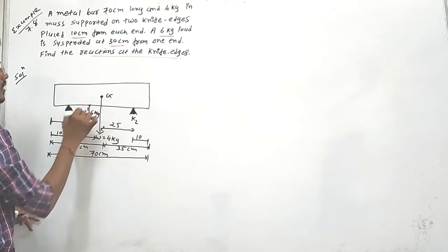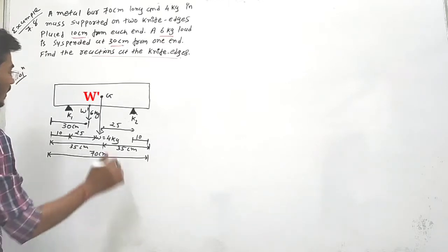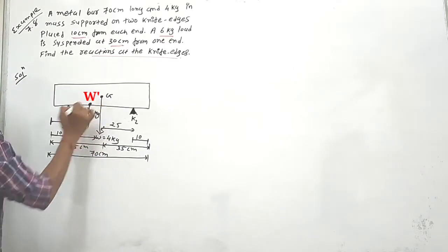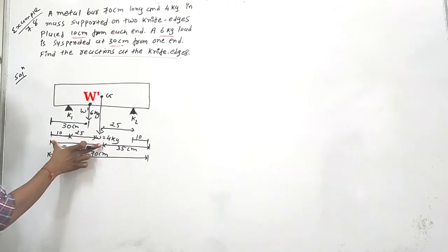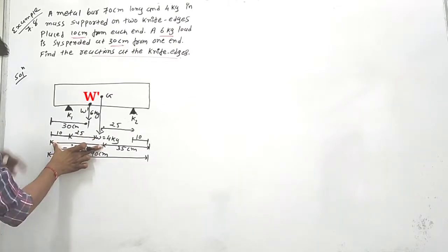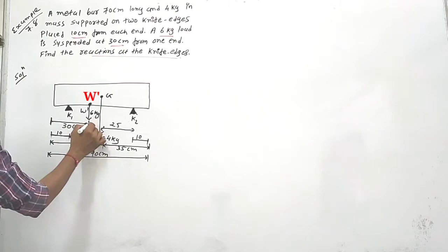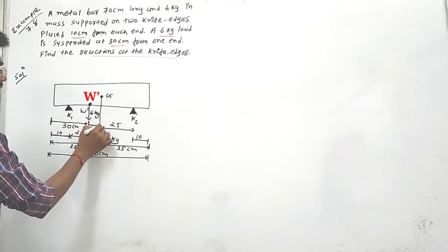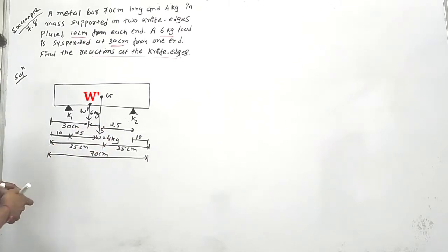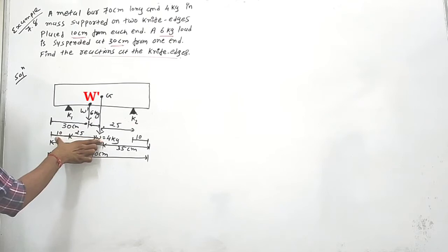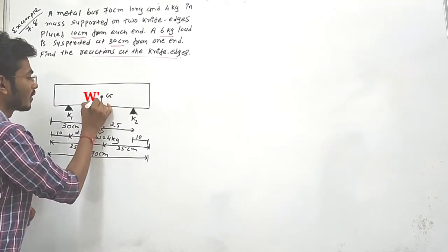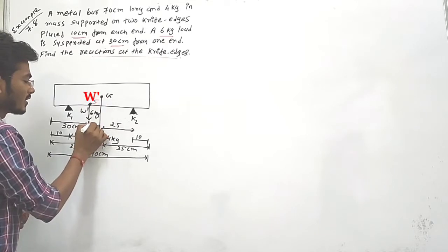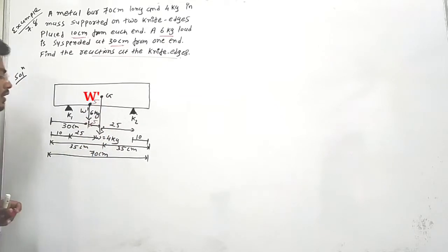We consider the 6 kg load as W'. This whole portion from the end to center G is 35 cm, and the load is at 30 cm from the end, so the remaining distance from the load to the center G is 5 cm. This distance of 5 cm is important for our moment calculation.